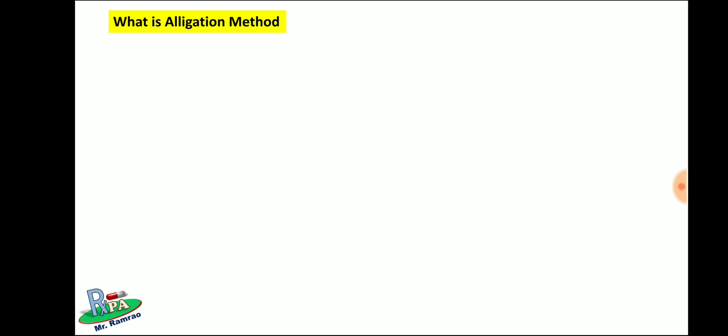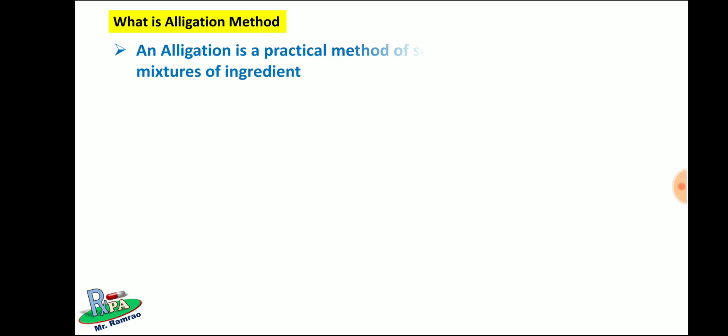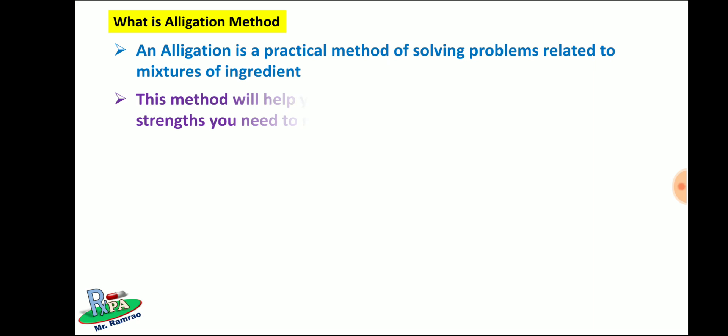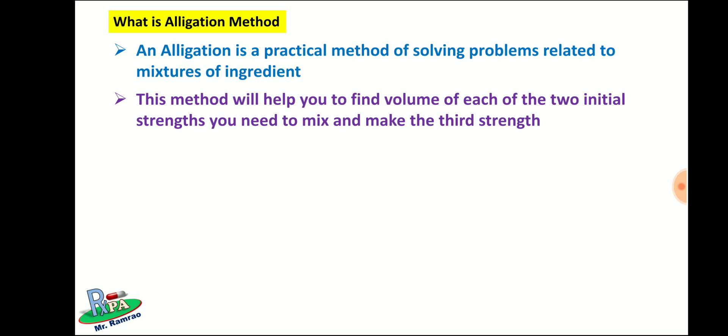Let's start with the subject. What is allegation method? An allegation is a practical method of solving problems related to mixtures of ingredients. This method will help you to find the volume of each of the two initial strengths you need to mix to make a third strength.